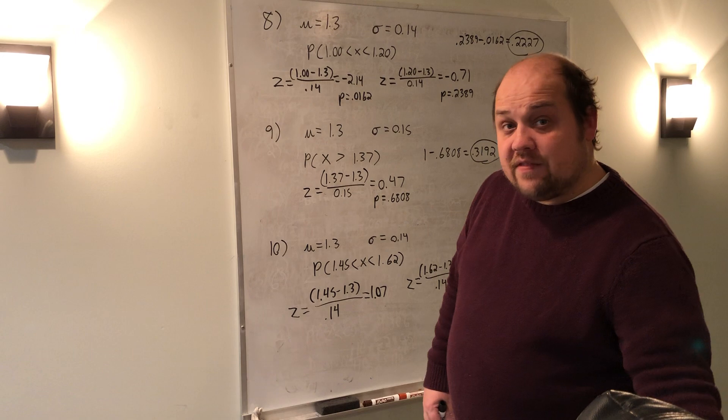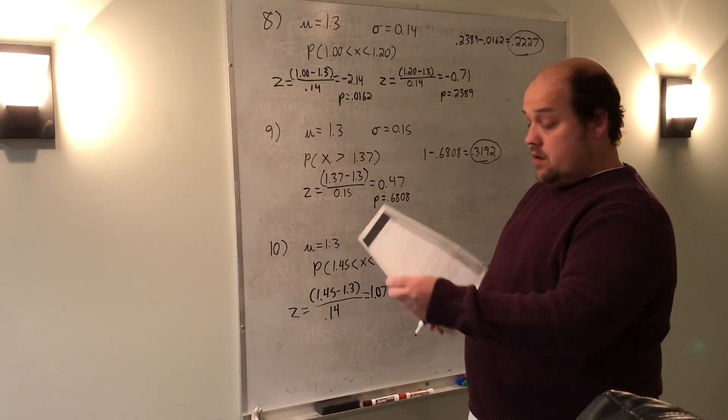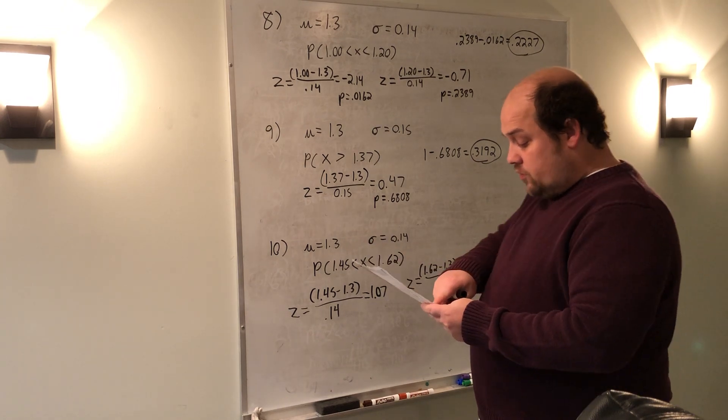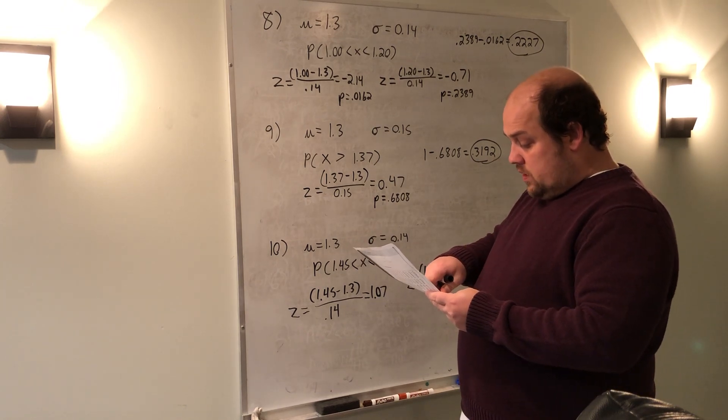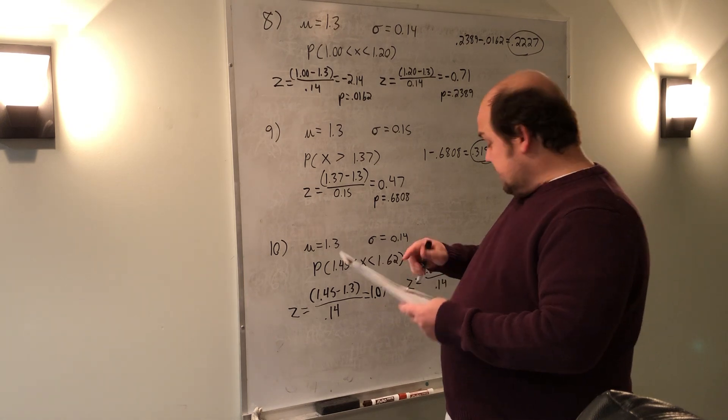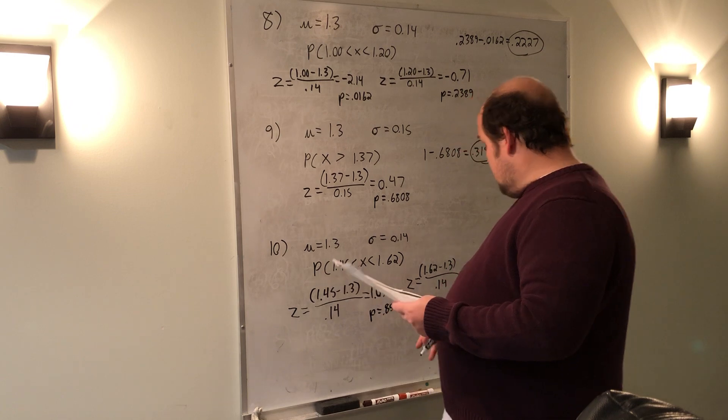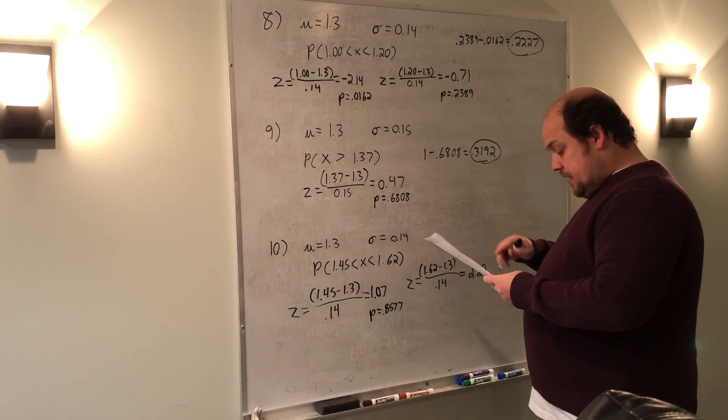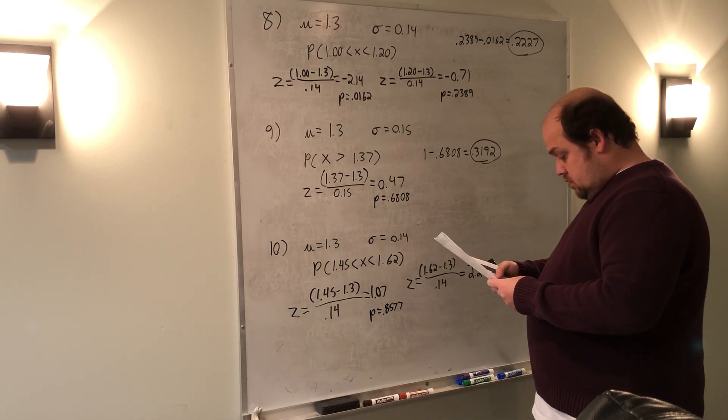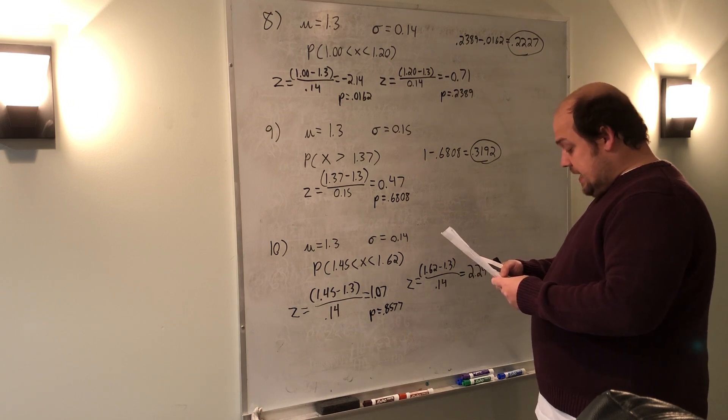Again, once I have the z-scores, I use them with my table. In this case, the positive side. To look up the p-values, for 1.07, I get a p-value of 0.8577. For 2.29, I get a p-value of 0.9890.